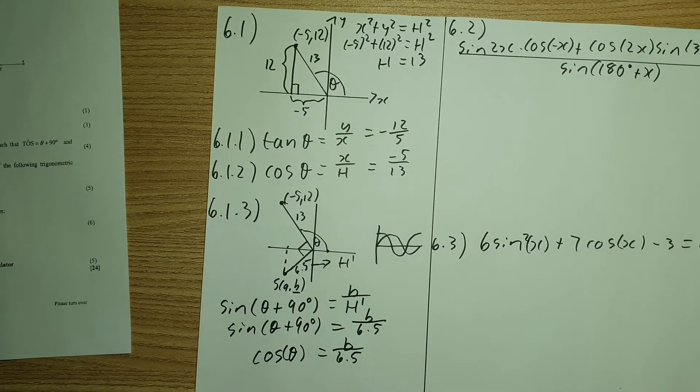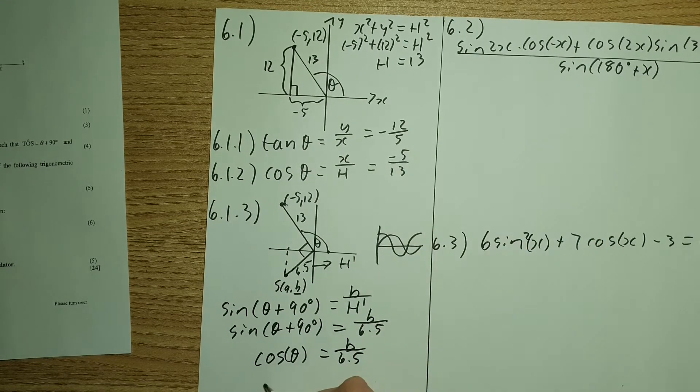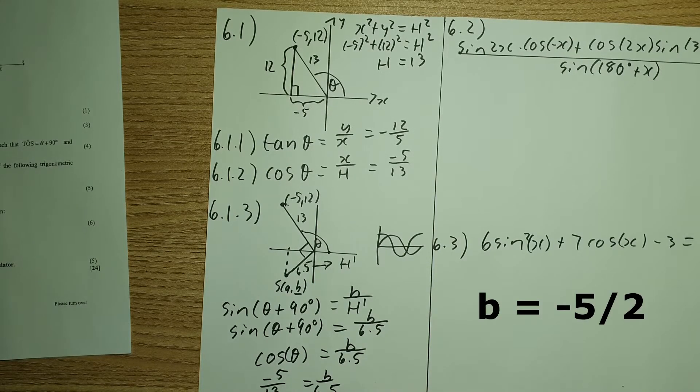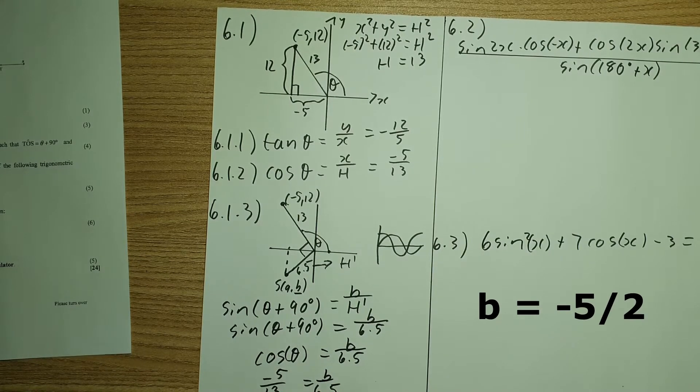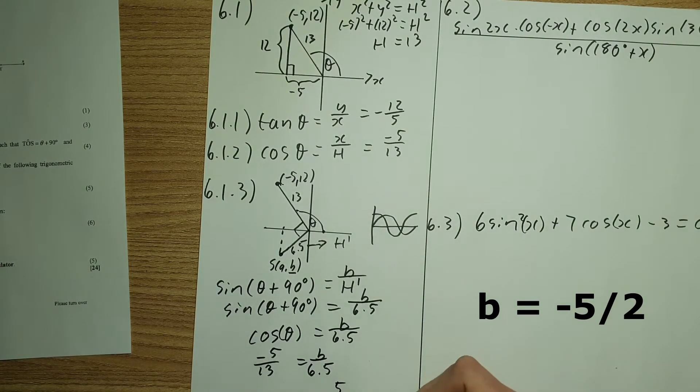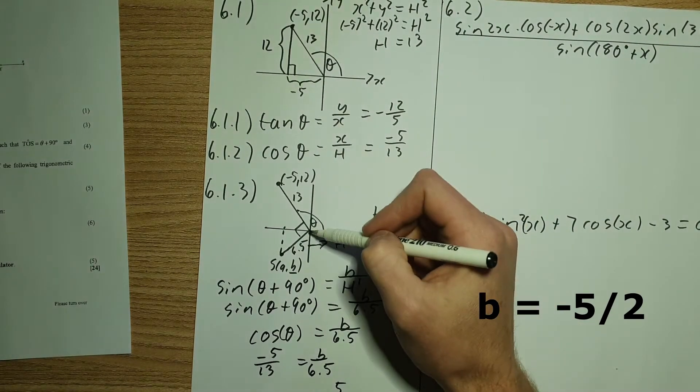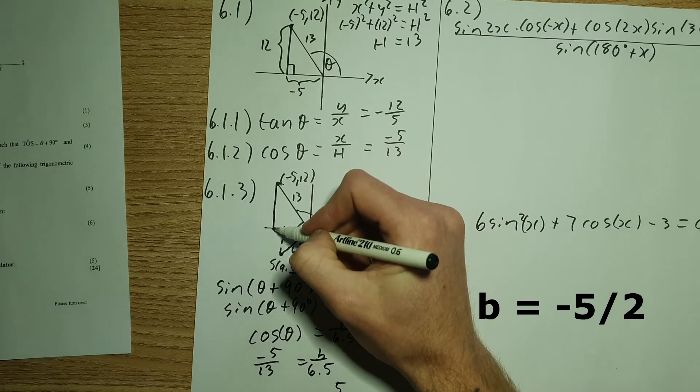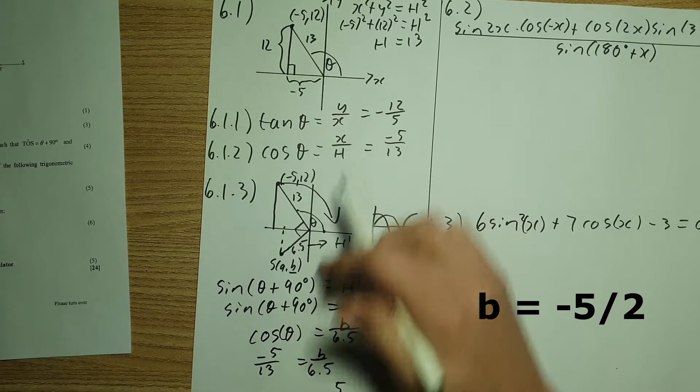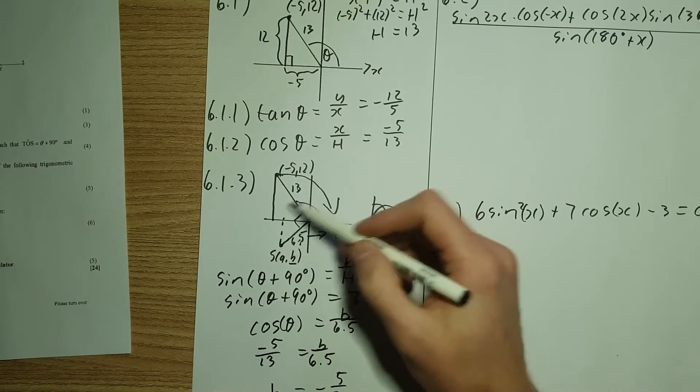Which means I have sine of theta plus 90 degrees equals to B over 6.5. But remember sine of theta plus 90, it's just indicating that I've shifted my sine graph to the left by 90 degrees, which means I now have a cos function. So this becomes cos of theta equals to B over 6.5. But we know what cos of theta is because we've calculated up here. So it's negative 5 over 13 equals B over 6.5. Therefore, B, once you've worked out the algebra is going to come to a value of negative 5 over 2.